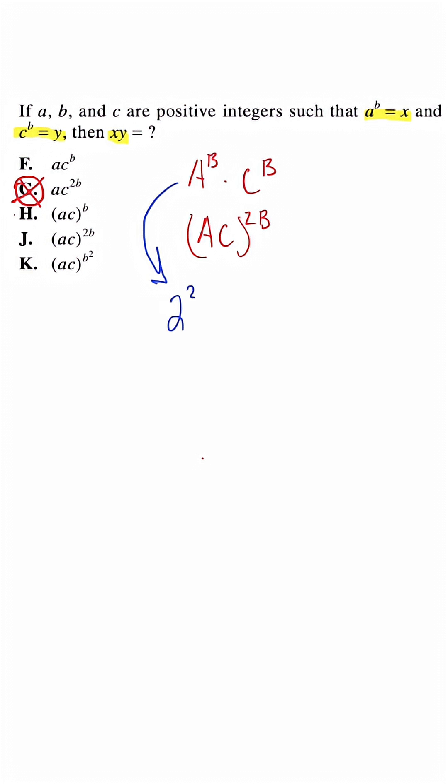We have 2 squared times 3 squared. If by the same logic, what we're saying is that we could take 2 times 3 and then add our exponent powers. So we'll have 2 times 3 to the 4th.